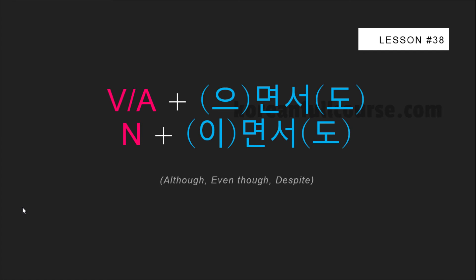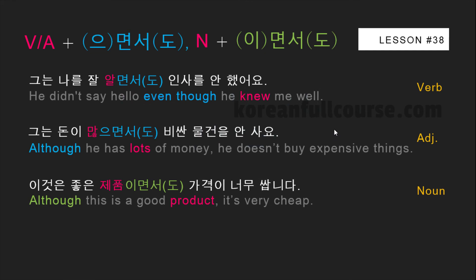Finally, the last more advanced use of 면서 is not related to simultaneous actions and is translated as 'although,' 'even though,' or 'despite.' This construction can be used with or without 도. For example: 그는 나를 잘 알면서도 인사를 안 했어요 — he didn't say hello even though he knew me well. 그는 돈이 많으면서 비싼 물건을 안 사요 — although he has lots of money, he doesn't buy expensive things. 이것은 좋은 제품이면서도 가격이 너무 쌉니다 — although this is a good product, it's very cheap.